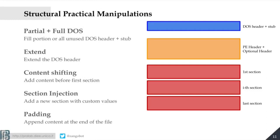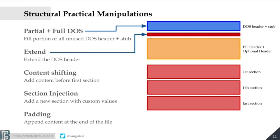Let's start from the top. Remember the useless portion in the executable? That is exactly one of the places an attacker would like to use to store adversarial content. The 'partial DOS' manipulation means I use all of that blue area — just being careful about some specific locations — and I can basically rewrite almost all of this area with the content I want. If the detector is using those bytes as features, well, I have bad news for them. That's the first manipulation.